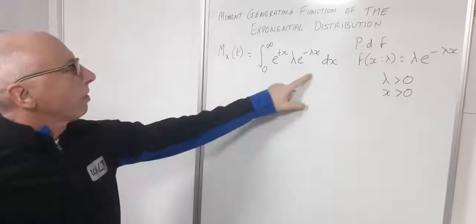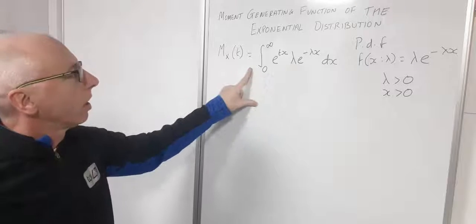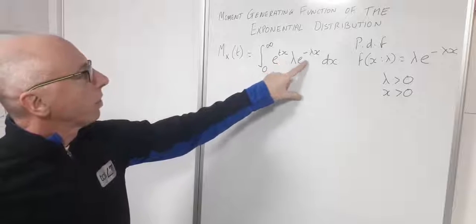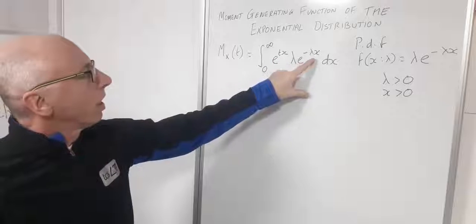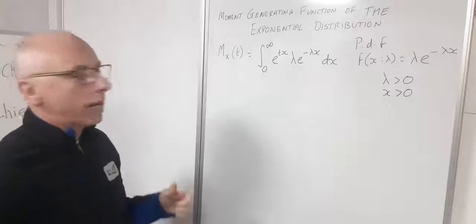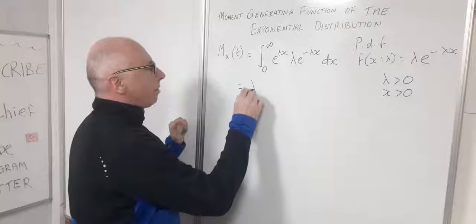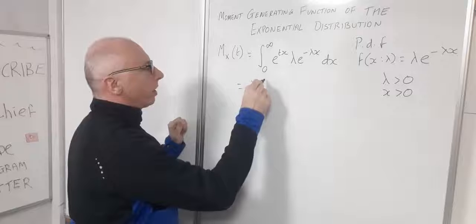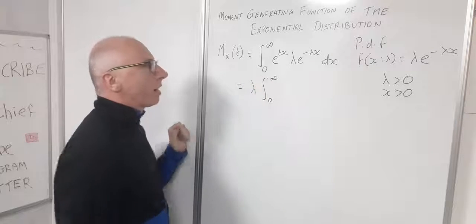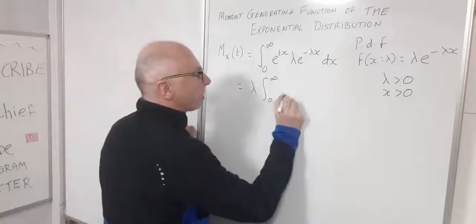We're integrating with respect to x. The λ can come out to the front, and we need to combine the two exponential functions since both contain x.